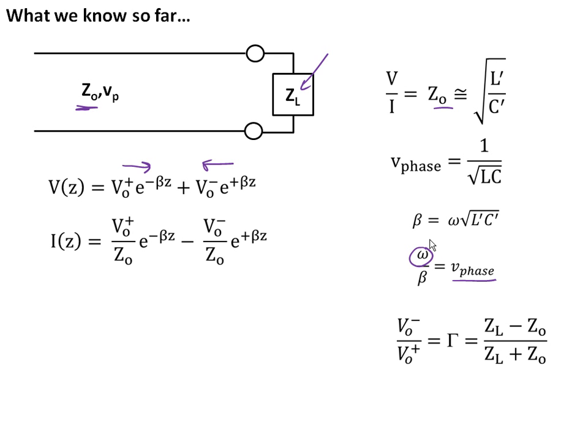We also know that the negative going wave and the positive going wave are related by the reflection coefficient, which is just a function of the characteristic impedance of the line Z-naught and the load impedance Z_L. And so this is all review. We've learned this up to date.